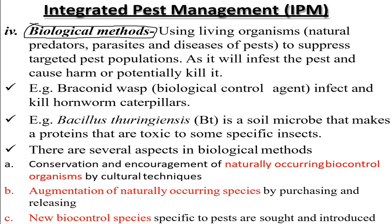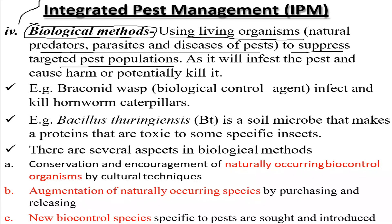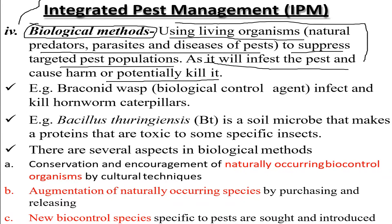The biological method under IPM involves using living organisms — natural predators, biocides, and diseases of pests — to suppress targeted pest populations. These organisms infest the pests and cause harm or potentially kill them, acting as predators to suppress pest populations.